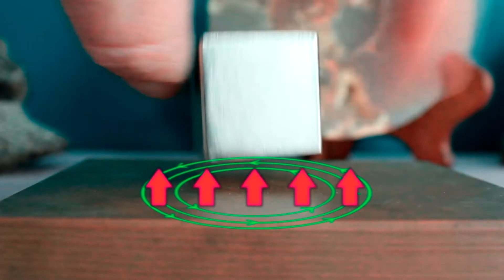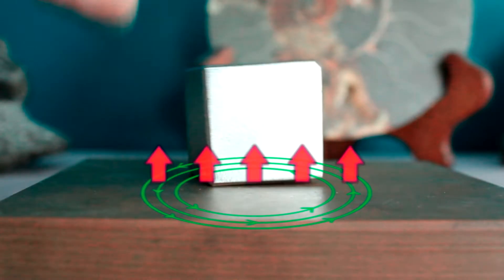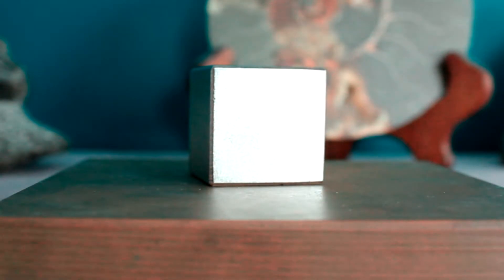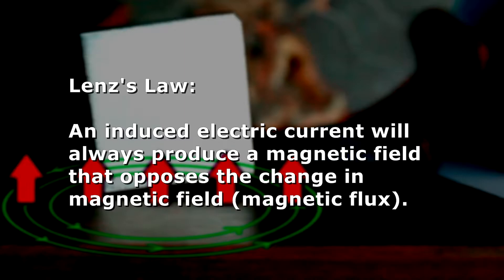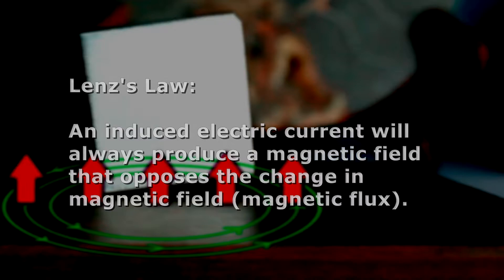But if the magnet moves away from the conductor, the induced field will oppose this too and actually attract the magnet. This idea is called Lenz's Law. A magnetic field produced by an induced current will always oppose the changing magnetic field. The produced magnetic field resists changes.